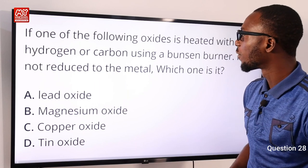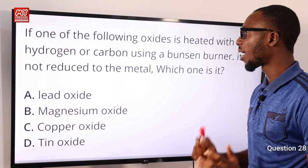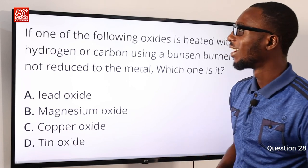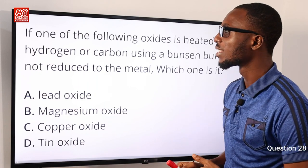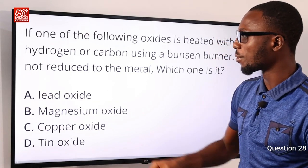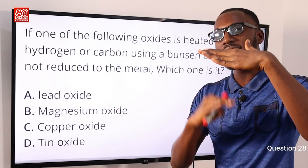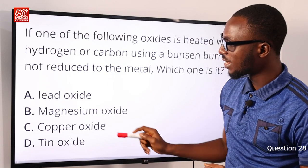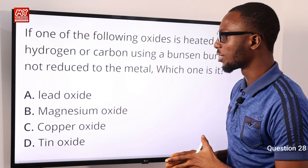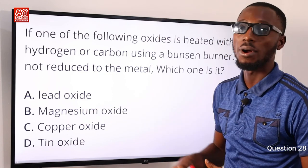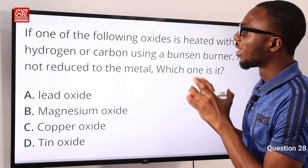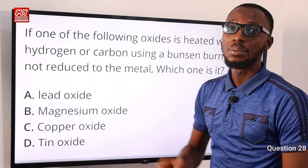Question 28. If one of the following oxides is heated with hydrogen or carbon using a Bunsen burner, it is not reduced to the metal — which one? Hydrogen is a strong reducing agent and reduces oxides of metals like copper, iron, lead, and zinc. Considering the activity series, all of these are reduced by hydrogen except magnesium, which is far above them. So magnesium oxide is not reduced by hydrogen or carbon, and option D is correct.